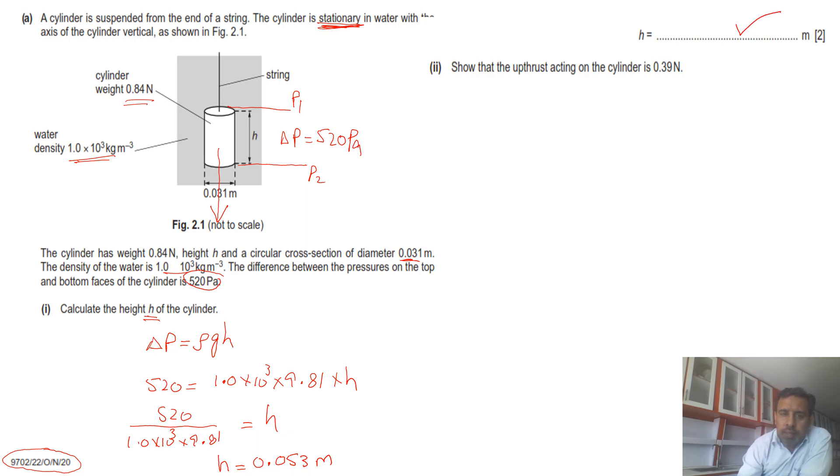Next, the second part of this question is show that the upthrust acting on the cylinder is this one. Upthrust means the force which is definitely acting upward because the direction of this force is always towards the less pressure.